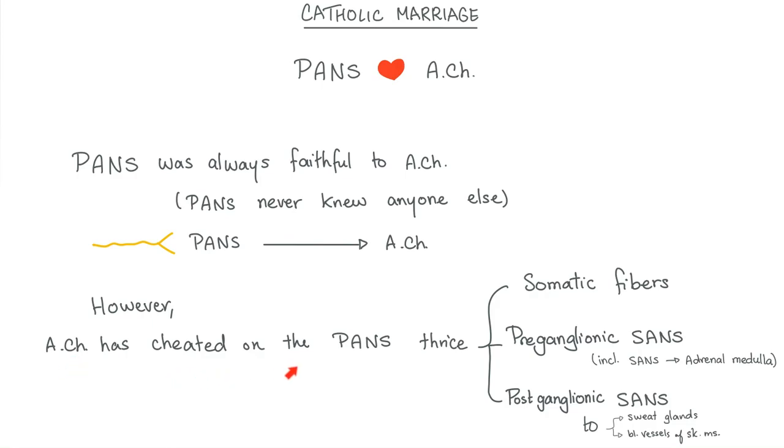However, acetylcholine is a cheating SOB. It has cheated on the parasympathetic nervous system thrice. Once at the somatic fibers - these are not parasympathetic, yet they still release acetylcholine. Preganglionic sympathetic - not parasympathetic, yet they release acetylcholine. And postganglionic sympathetic to sweat glands - not parasympathetic, yet they secrete acetylcholine.